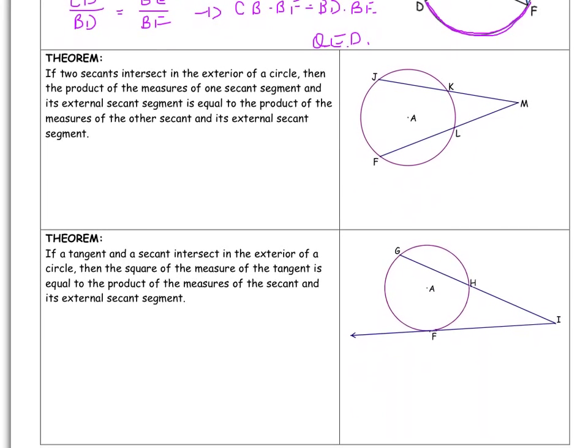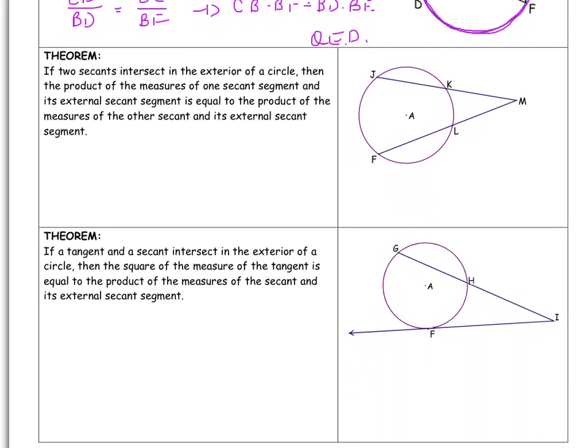The second theorem that we're going to look at involves two secants. It says if two secants intersect in the exterior of a circle, then the product of the measures of one secant segment and its external secant segment is equal to the product of the measures of the other secant and its external secant segment. So that's a lot of words.